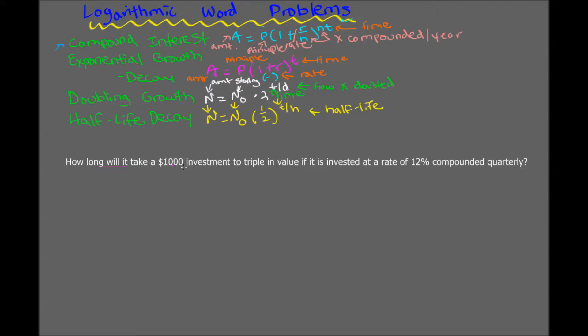How long will it take a $1,000 investment? So that's going to be our principal, $1,000 to triple in value. Because it's tripling in value, that means you want to end up with $3,000. And that's equal to 1 plus R, which is the 12%, and it's expressed as a decimal, not 12. Don't put 12 there. Put 0.12. And then it's compounded quarterly, which means four times a year, which means that your N is going to be four.